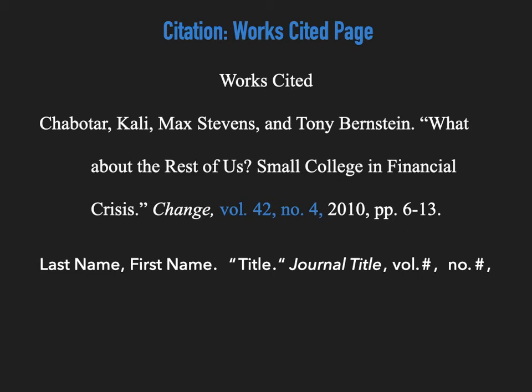The final portions of the scholarly source citation are the year of publication and the page numbers of the article. After providing the year of publication and a comma, we then abbreviate page numbers with 'pp.' and give the all-inclusive page numbers on which the article can be found. Finally, we end the citation with a period. By providing this set of information in this order, we make it easy for a reader to find and validate the information that we are providing from scholarly sources.